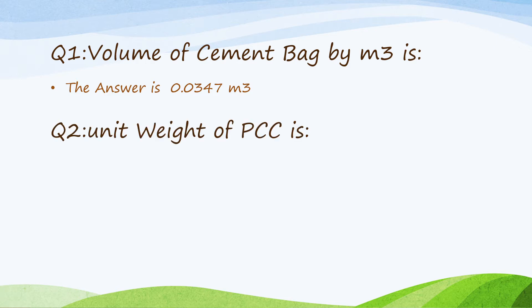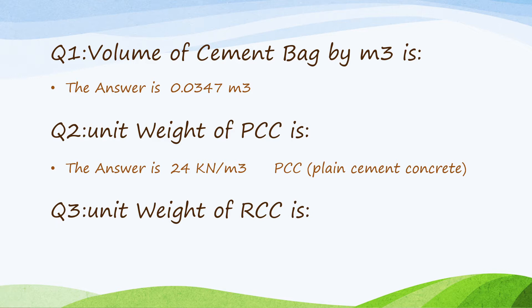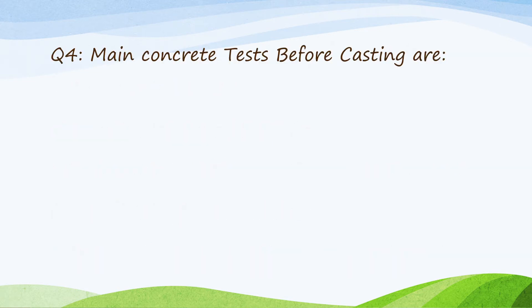Question two: Unit weight of PCC (plain cement concrete) is 24 kilonewton per cubic meter. Question three: Unit weight of RCC (reinforced cement concrete) is 25 kilonewton per cubic meter.